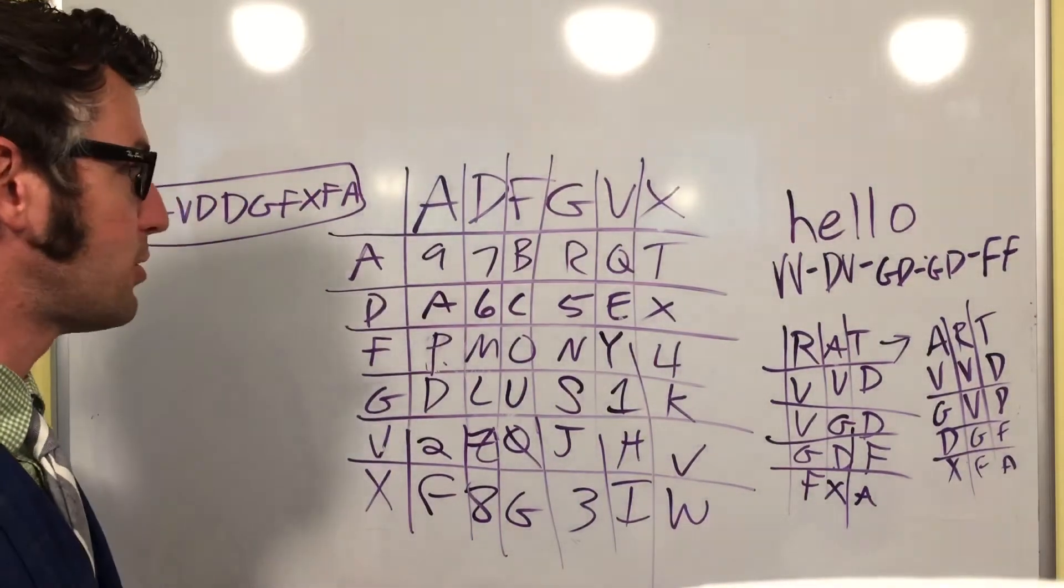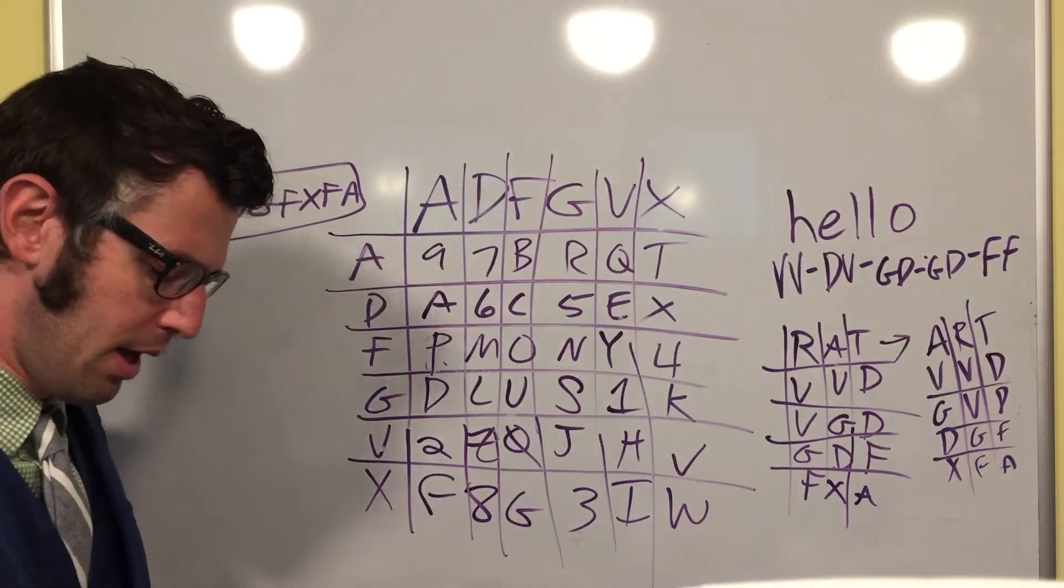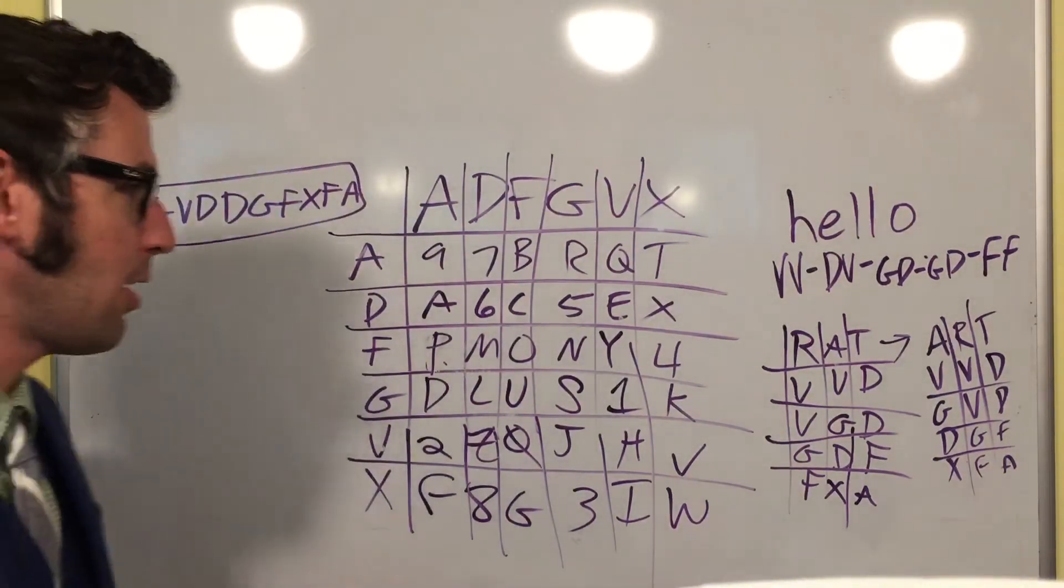So we'll talk in the next video about how to decipher this. I'll walk you through the process. You're just going backwards, basically. But that's the A, D, F, G, V, X cipher. That's how you encipher with that. I hope that helps.